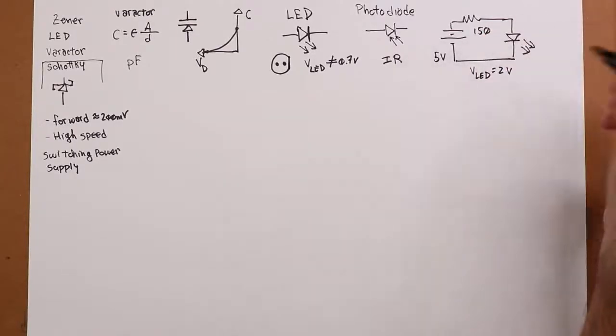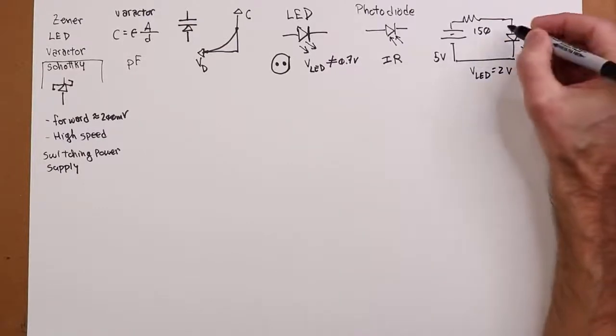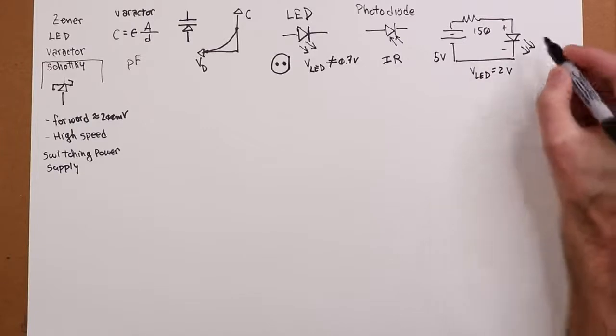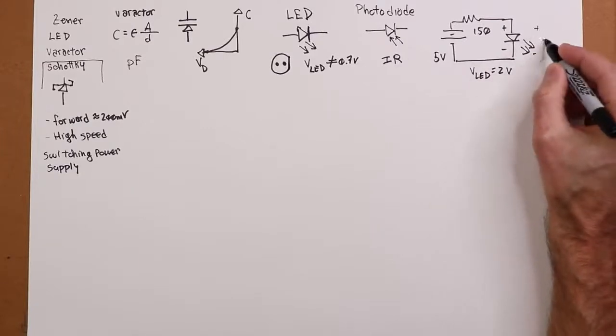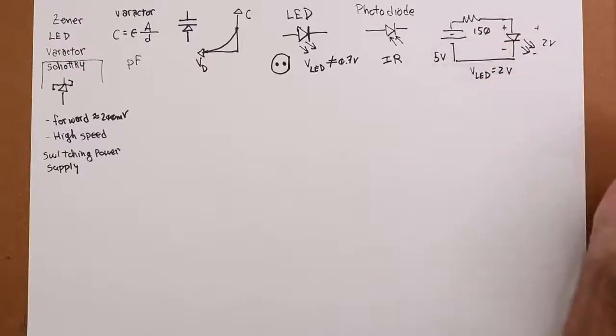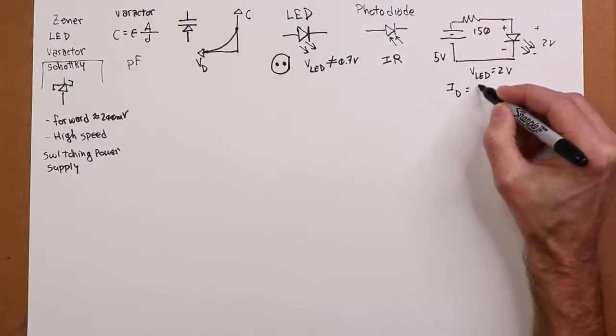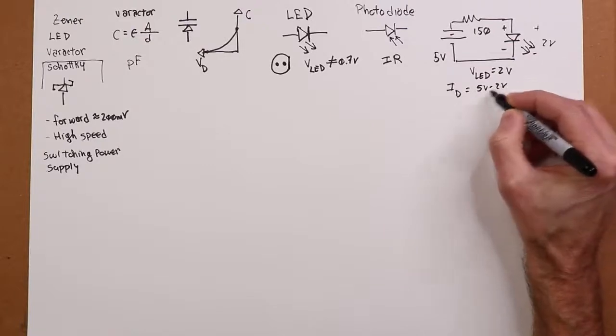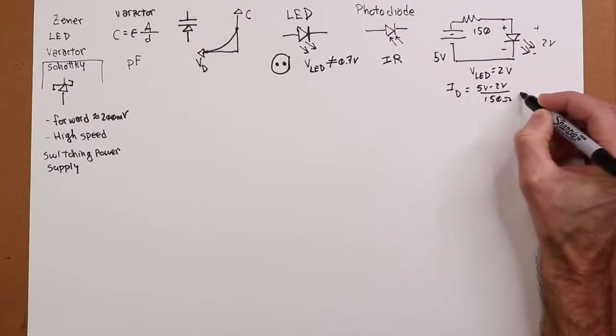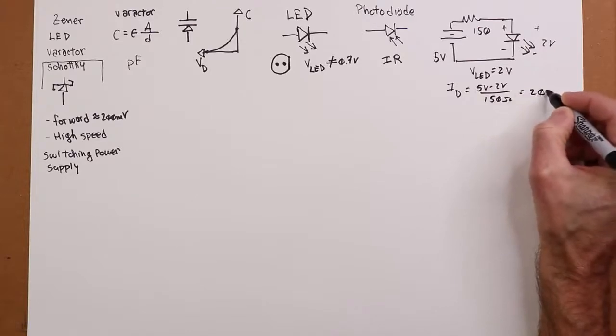Well, if that was a normal diode, you'd just say it's forward biased, but instead of saying it's 0.7, you'd say it's 2. So if there's 2 volts out here, then there must be 3 volts across the resistor for KVL, which means that the diode current would have to be 5 volts minus 2 volts over 150 ohms.